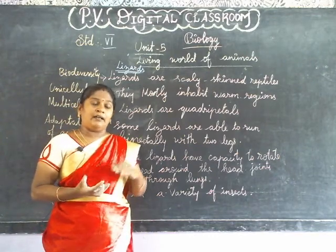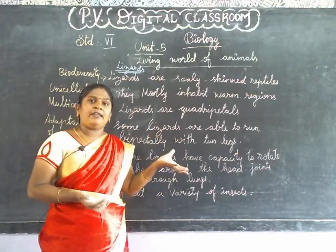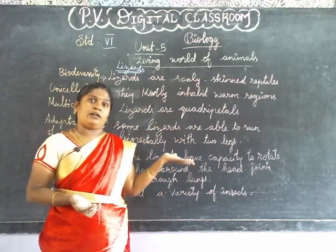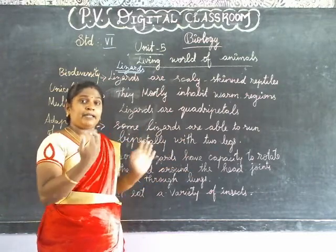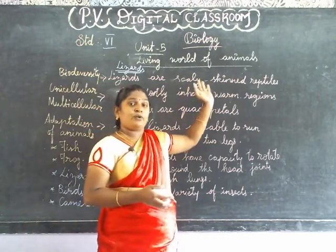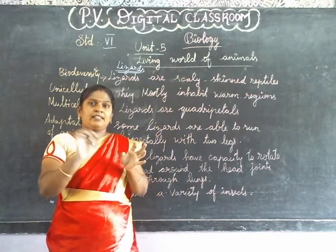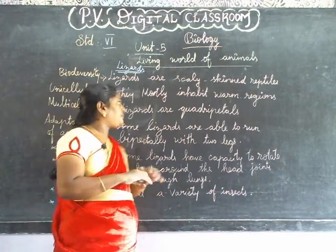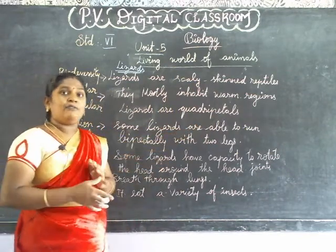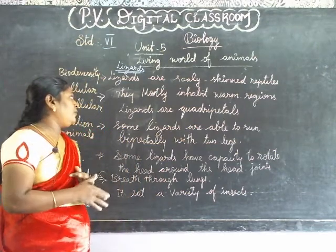Reptiles are cold-blooded animals — they are found in the ground. Their blood temperature varies with the environment, so they are cold-blooded. They live and are inhabited in warm regions. Reptiles have scaly skin.